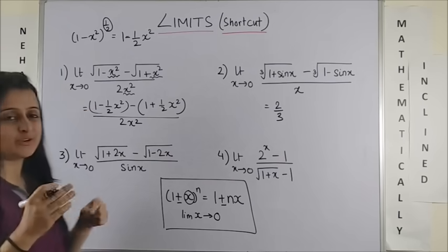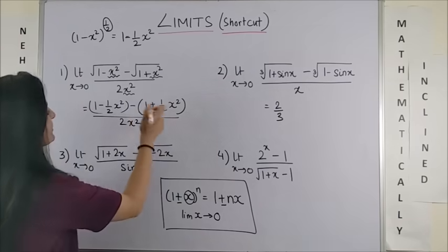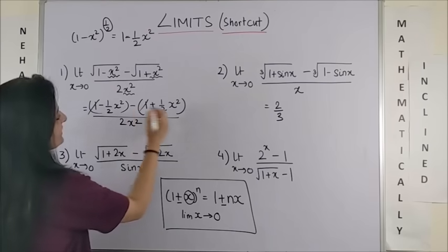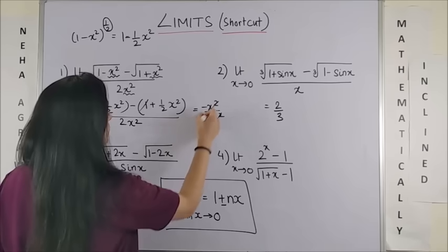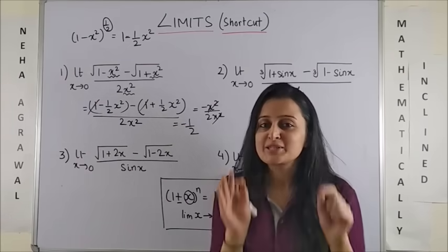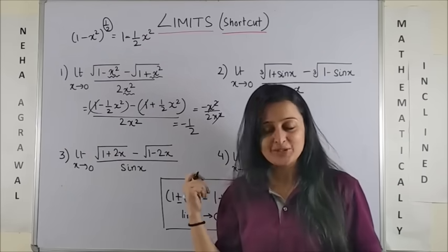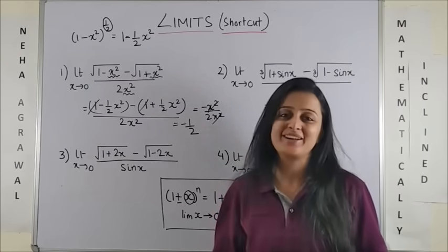Please note the constant stays as it is and the power just comes inside with the variables upon 2x square. Now, I'm just not writing the limits because this is just a shortcut. These get cancelled. We are left with minus x square upon 2x square. These get cancelled. The answer is minus half. Trust me, explaining takes longer than what you can actually do. And at times, you can do it mentally as well.